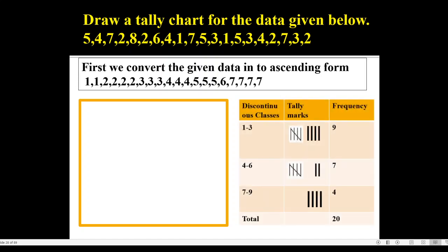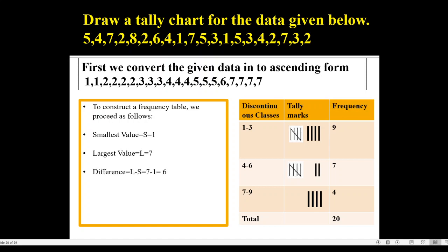To construct a frequency table, first we consider the smallest value. Here the smallest value is 1. Then the largest value, which is 7. Then the difference of these two values: 7 minus 1 is 6. If we have more numbers and the difference is bigger, we can still follow these steps to find the difference.